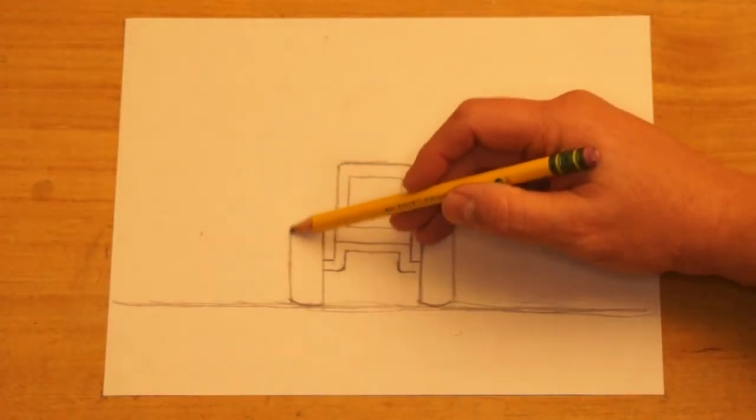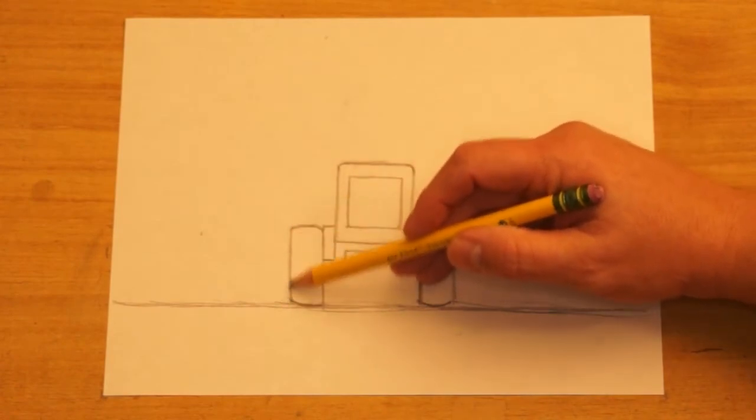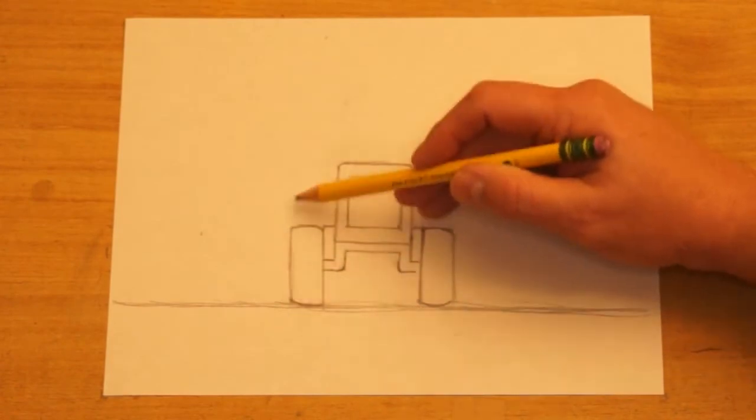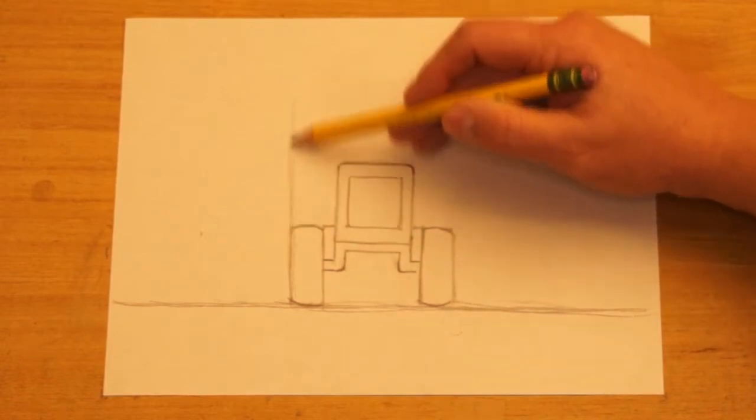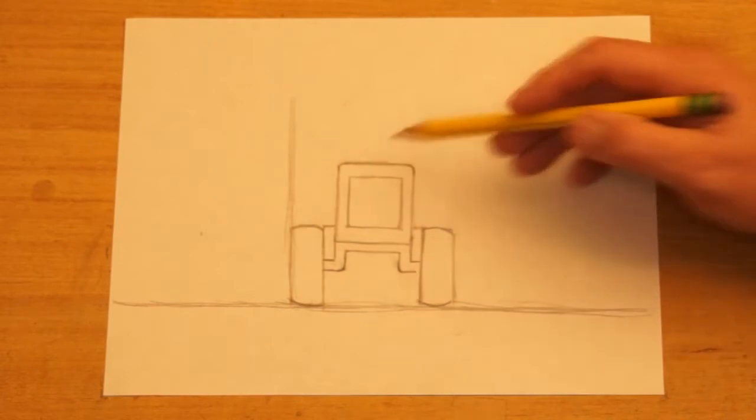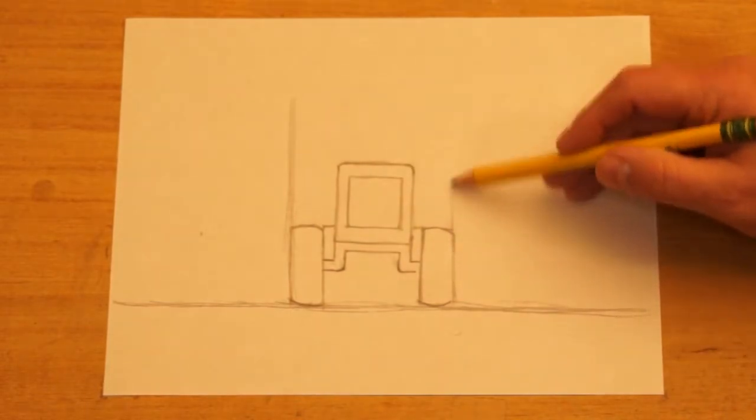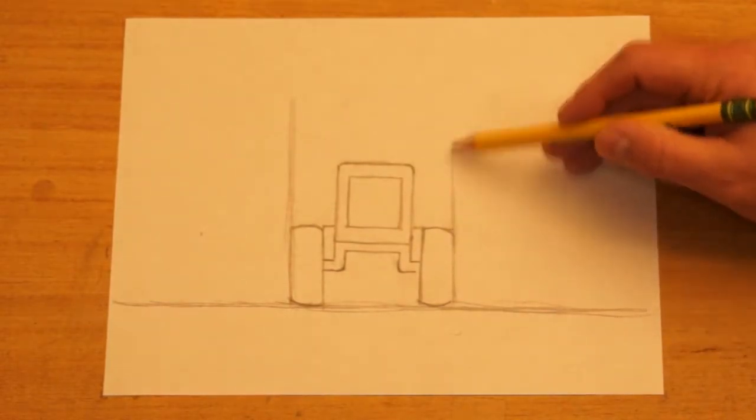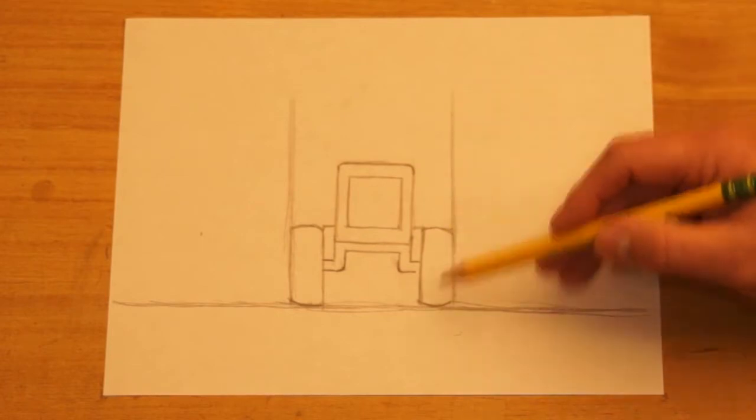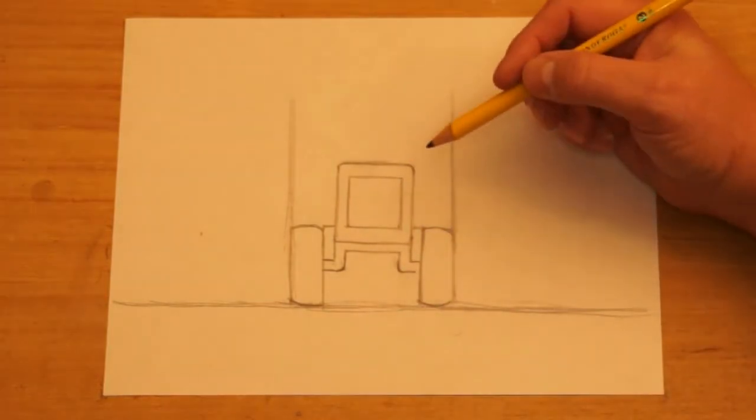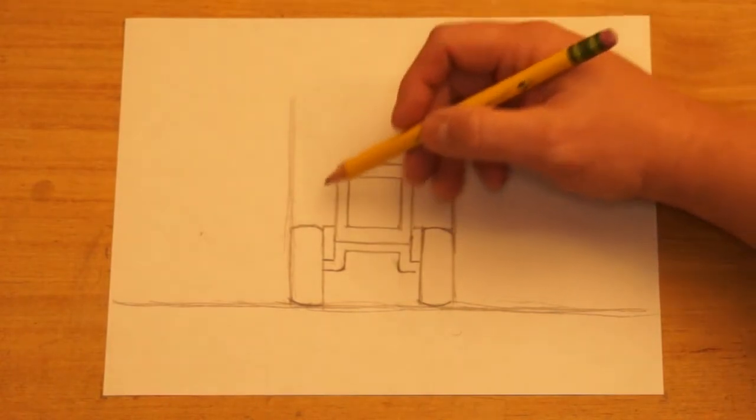The middle of the back tire is going to be in line with the edge of the front tire, so I'm going to make a line straight up, very light that extends all up higher. We'll find the top of that in just a second, so just straight up.